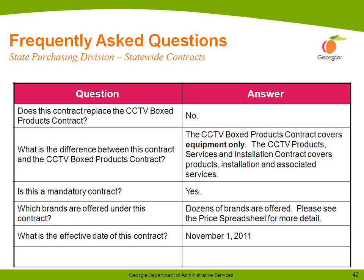Which brands are offered under this contract? You all saw some of those brands listed in the slides that all of our suppliers presented. Those are also listed on our pricing spreadsheet. We've got many, many brands that are covered. The next question is: what is the effective date of this contract? This contract was awarded on November 1st of this year, and as I stated earlier, it will go through October 31st of 2012, and then we have four one-year optional renewals.